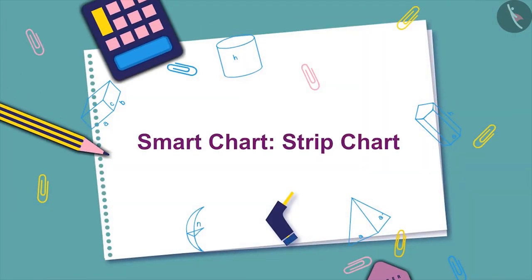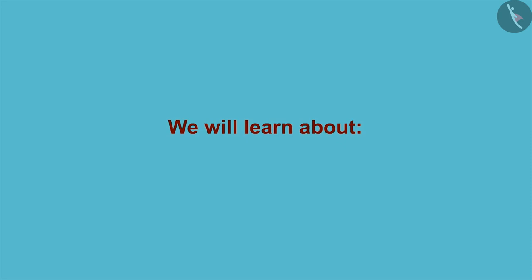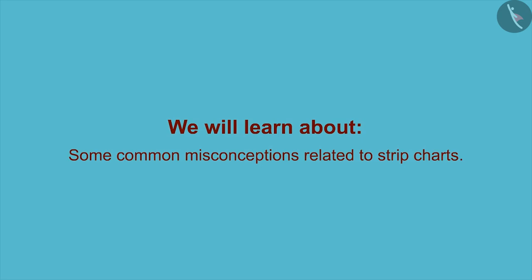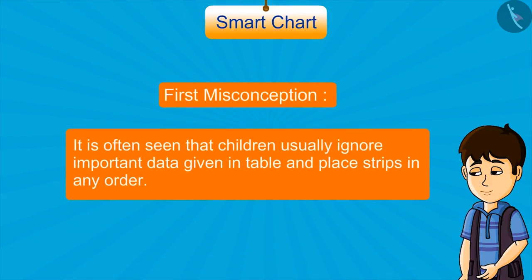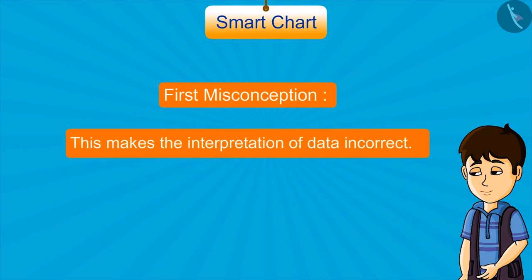In this video, we will learn about some common misconceptions related to strip charts. It is often seen that children usually ignore important data given in a table and place strips in any order, which makes the interpretation of data incorrect.